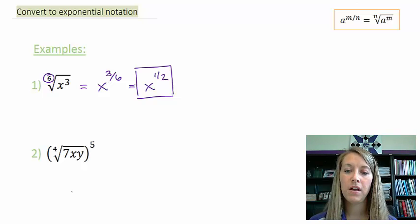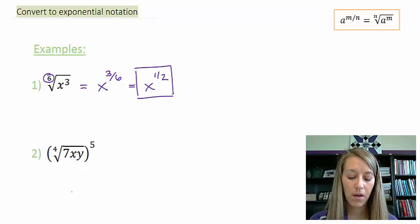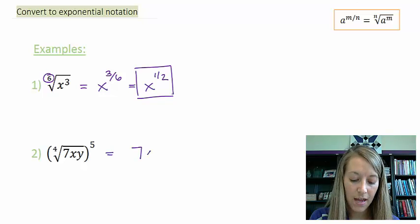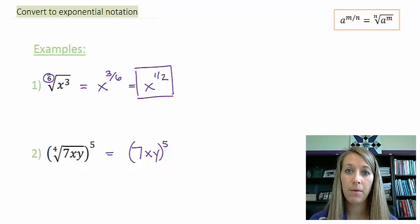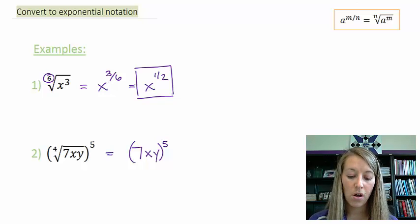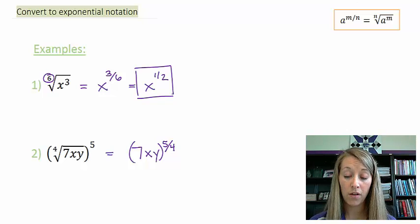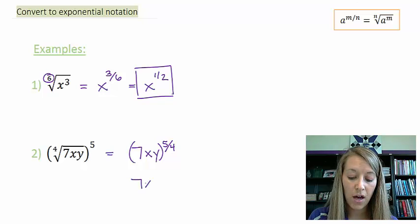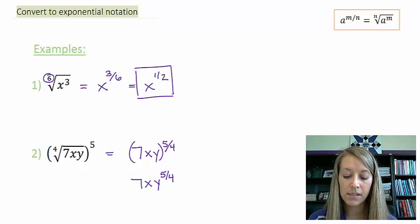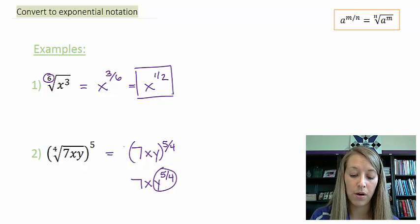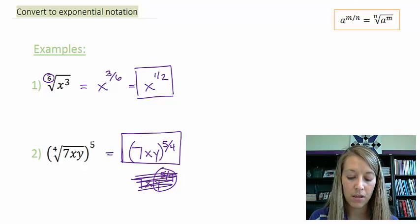Example two: the fourth root of 7xy all to the fifth power. Make sure to keep everything to the fifth power because that's what the parentheses indicate, and then that is all to the fourth root. So this becomes 7xy all to the 5 over 4 power. The key part is keeping the parentheses, because without them only y would be raised to the 5 fourths power, not the entire expression.